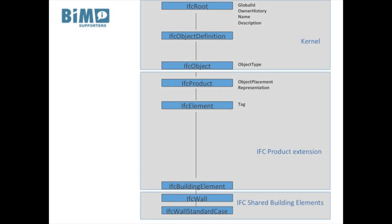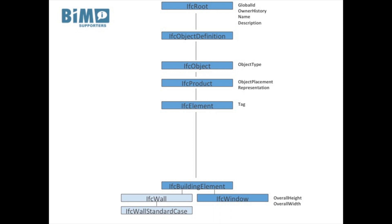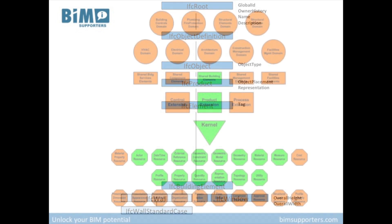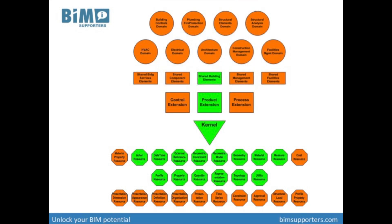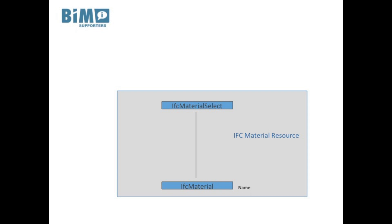We have the generic entities in the kernel, the entities of the IFC product extension and the IFC shared building elements. When we look at an IFC window, we see the same specialization structure and inheritance of property definitions. The resource layer holds basic properties such as geometry, material, quantity, etc. An example of an entity on the resource layer is IFC material. An IFC material is a separate object in an IFC dataset which can refer to multiple different objects. The object does not include a globally unique identifier and it is not allowed to be used independently of an object declared at a higher layer. In other words, you can only include materials in an IFC dataset when they refer to an actual object that is a specialization of IFC root.